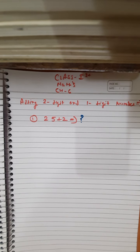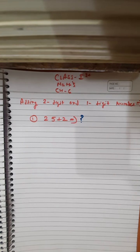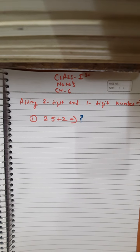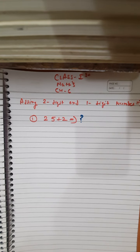Our first example is 25 plus 2. This is a very big number — how can we add it? Today we will learn the rules of addition. We already know every number is made up of 10s and 1s, so we can break every number into digits of 10s and 1s. How can we do that?